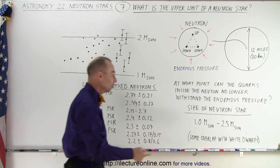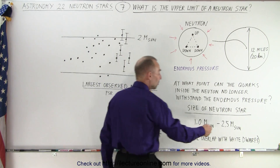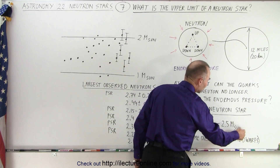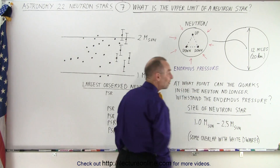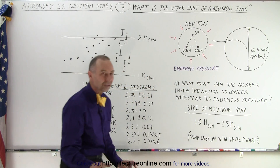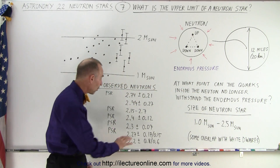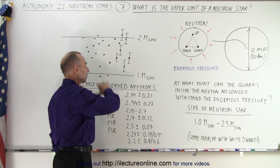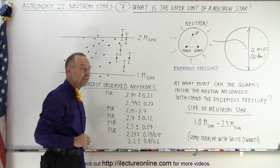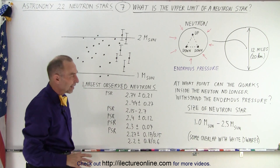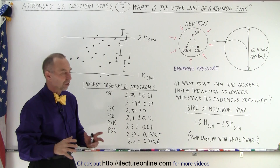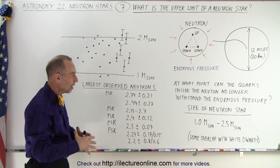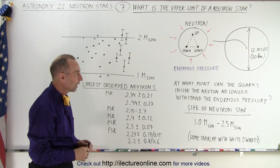Because of that, the general rule of thumb is that neutron stars are somewhere between 1 and 2.5 times the mass of the sun, with some rare exceptions that may be slightly smaller or slightly bigger. That's the generally accepted mass range of a neutron star.